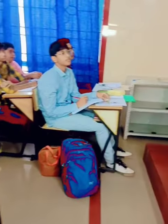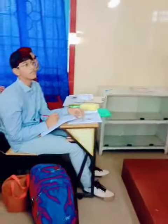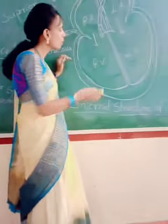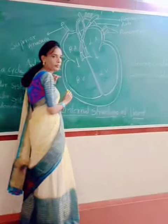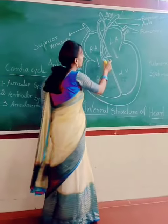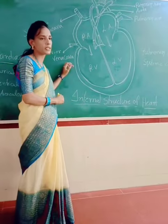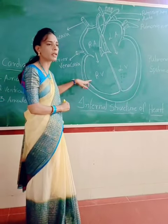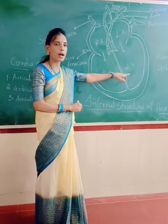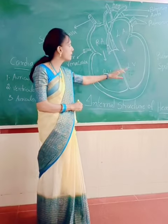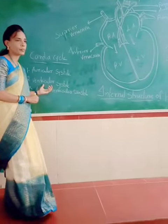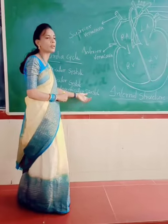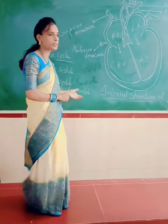The second stage is the ventricular systole. When the blood fills the two ventricles, the two ventricles will contract immediately. Due to that pressure, two valves will open, and the blood will go to the two blood vessels — the pulmonary artery on the right side and the aorta on the left side. This is called the ventricular systole.